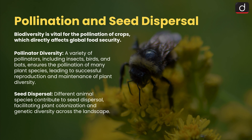Now let's discuss the importance of biodiversity. Biodiversity is vital for the pollination of crops, which directly affects global food security. Pollinator diversity — a variety of pollinators including insects, birds, and bats — ensures the pollination of many plant species, leading to successful reproduction and maintenance of plant diversity. Regarding seed dispersal, different animal species contribute to seed dispersal, facilitating plant colonization and genetic diversity across the landscape.